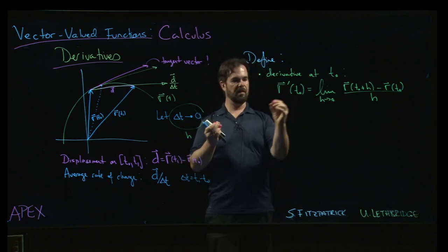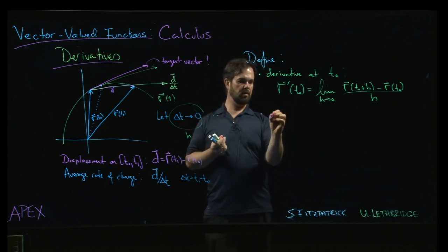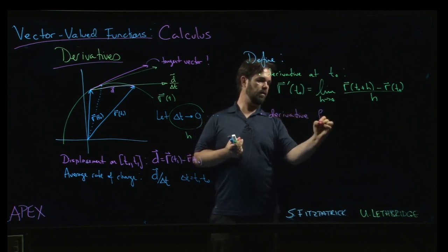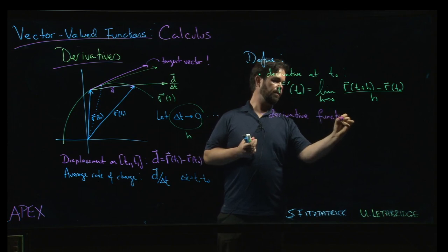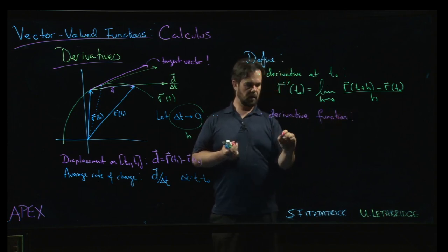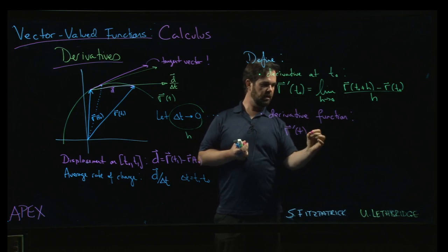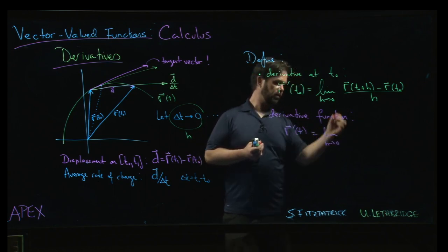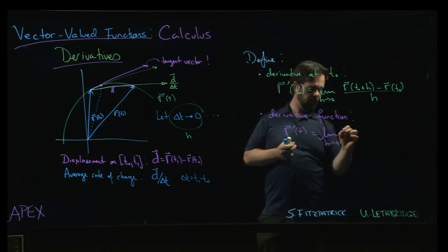And then of course you can now vary the point and you can get the derivative function. That's going to be r prime at t, and the only difference is we just replace t naught by t.